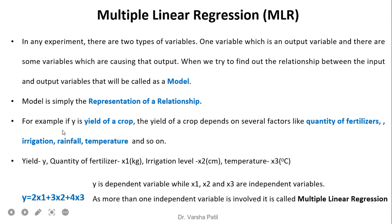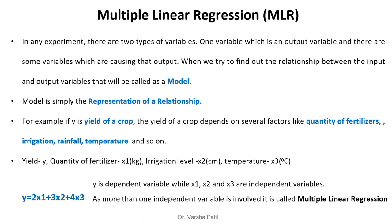For example, if y is the yield of a crop, then the yield depends on several factors like quantity of fertilizers, irrigation, rainfall, and temperature. The output variable y, that is the yield of the crop, is caused by the set of input variables like quantity of fertilizers, irrigation level, and temperature.